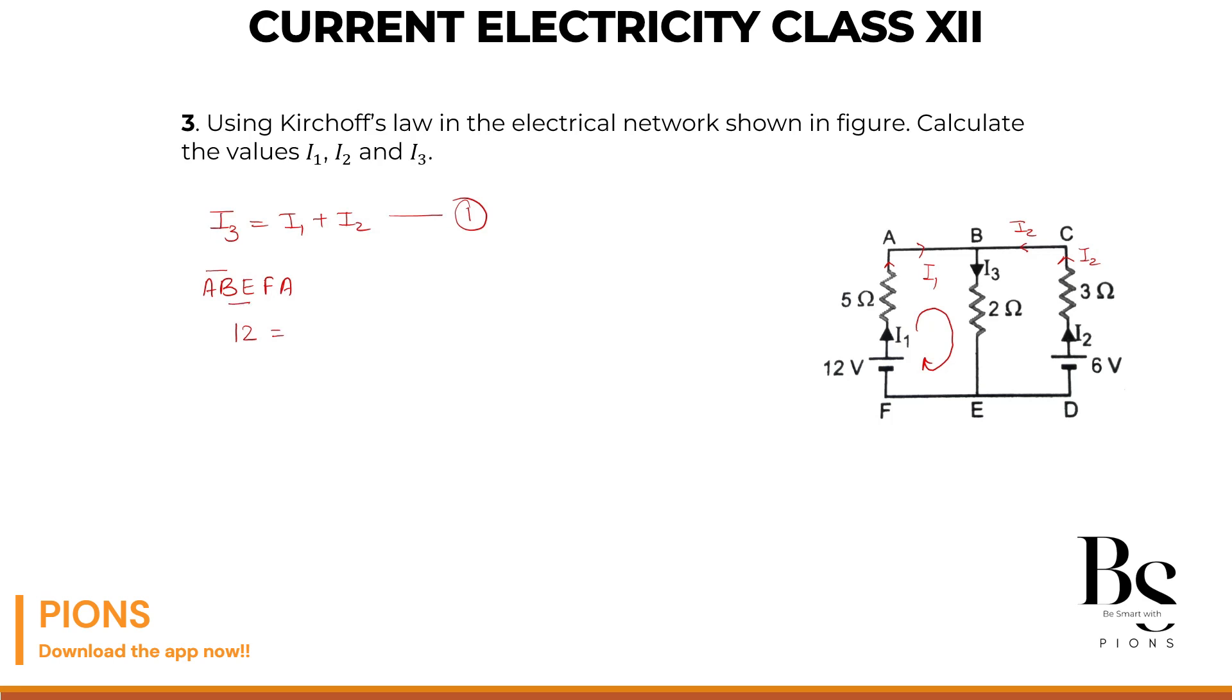B to E, yes, 2 Ohm resistor and current I3 is there. E to F, nothing. F to A, yes, 5 Ohm and that too in the same direction. I am also going from F to A, current is also going from F to A, 5 times I1.